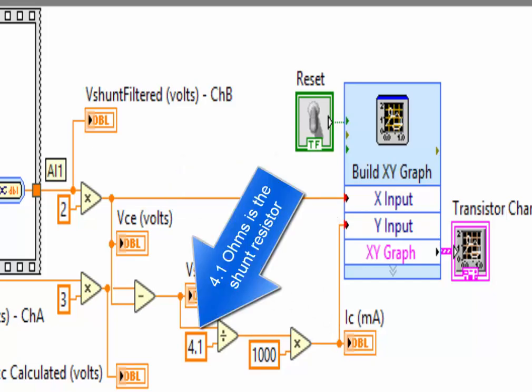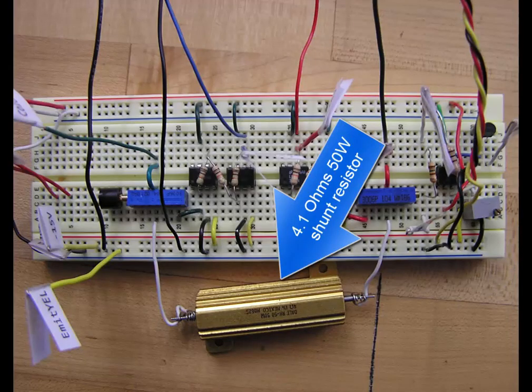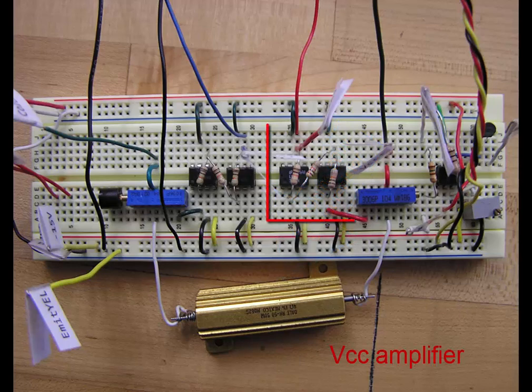4.1 ohms is the shunt resistor. Here's the 50-watt, 4.1-ohm shunt resistor. There's the VCC amplifier.